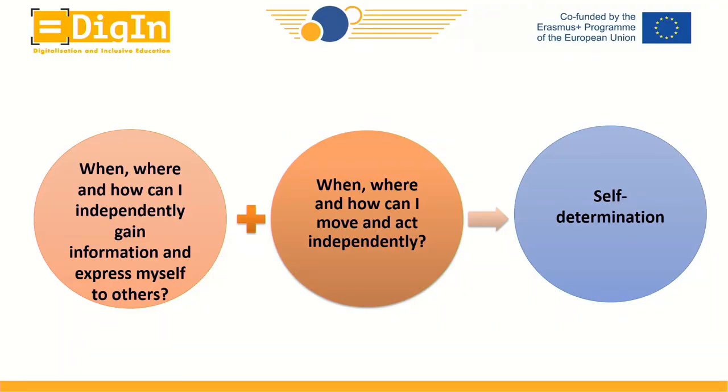So principally, the person in need of assistive technology has to ask themselves: when, where, and how can I independently gain information and express myself to others? It's always about receiving information and also expressing ourselves to others. And: when, where, and how can I move and act independently? All of this adds up to self-determination.